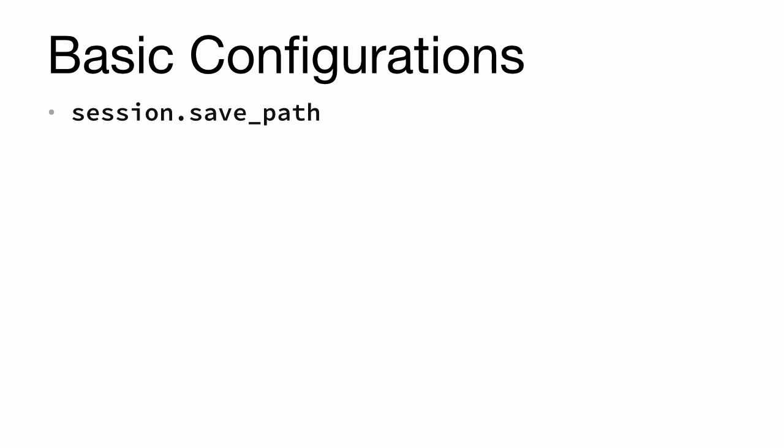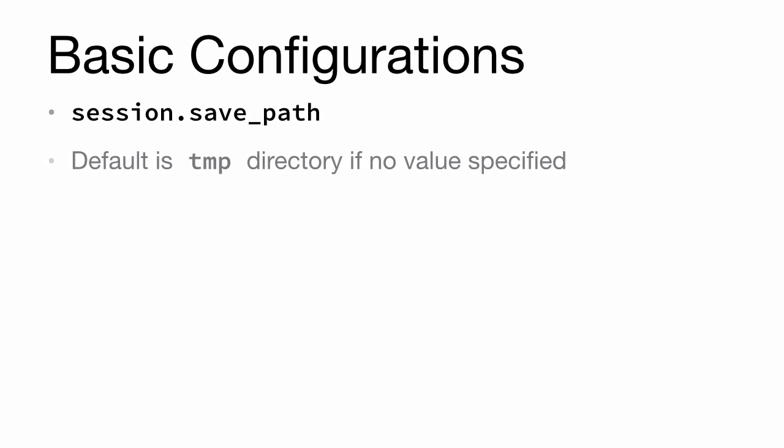Then we have session.save_path, which sets the location where the session data is stored on the server. The default, if empty, is the tmp directory if no value is specified. So if there is no value, it's going to use your system's temporary directory. For example, on a Mac it's going to use a temporary directory inside the var directory.